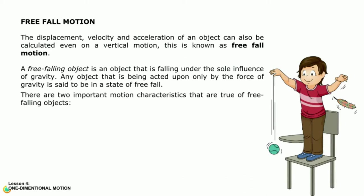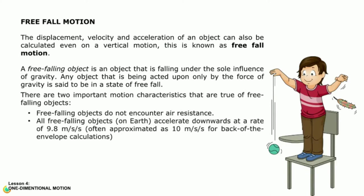There are two important motion characteristics that are true of free falling objects. First, free falling objects do not encounter air resistance. Second, all free falling objects on earth accelerate downwards at a rate of 9.8 meters per second per second, often approximated as 10 meters per second per second for back-of-the-envelope calculations.